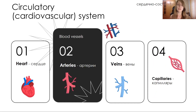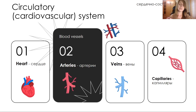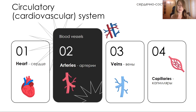Let's start with the circulatory or cardiovascular system. Here we should talk about the heart, which pumps our blood, and of course blood vessels. The types of blood vessels include arteries, which carry blood away from the heart, veins, which carry blood to the heart, and small blood vessels called capillaries.